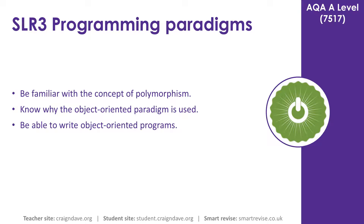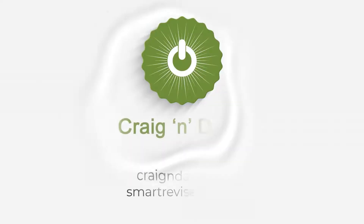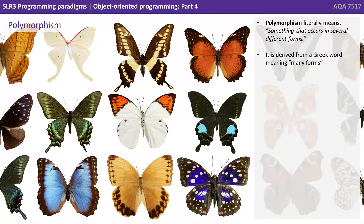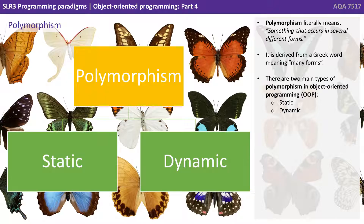In our fourth video on object-orientated programming, we take a look at the concept of polymorphism. Polymorphism literally means something that occurs in several different forms — it is derived from a Greek word meaning many forms. There are two main types of polymorphism in OOP: static and dynamic.